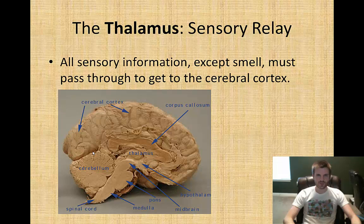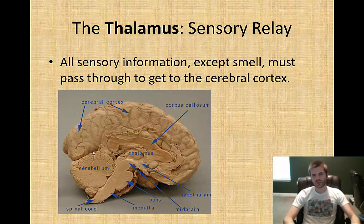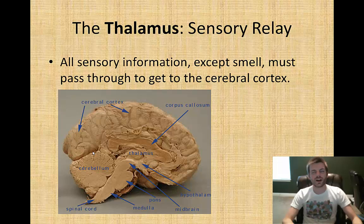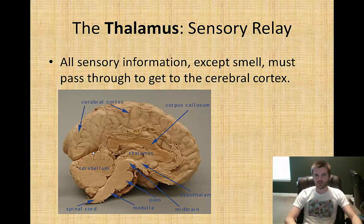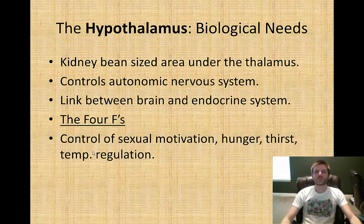The thalamus is the area of your brain responsible for the relay of sensory information. Any type of sensory information — sight, sound, taste, touch — is going to be routed through the thalamus and then directed to whichever area of the brain it needs to go. The only exception is smell, which is handled in a separate part of brain tissue known as the olfactory bulb, and that will be covered in a later video.